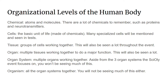Organs are multiple tissues working together to do a major function. This will also be seen a lot throughout this event. Organ systems are multiple organs working together. There are three organ systems in each rotation of anatomy and physiology, but other than that you will not be seeing much of this. Organisms are all the organ systems together. You won't really be seeing much of this in the event either.